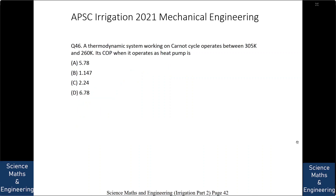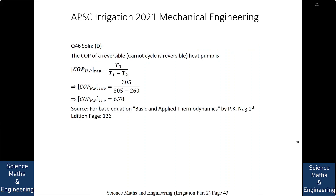A thermodynamic system working on a Carnot cycle operates between 305 Kelvin and 260 Kelvin. Its COP when it operates as a heat pump is: (A) 5.78, (B) 1.147, (C) 2.24, or (D) 6.78. The answer is D: 6.78. The COP of a reversible heat pump on the Carnot cycle is T1 divided by (T1 minus T2), which equals 305 divided by (305 minus 260), that is 305 divided by 45, which equals 6.78.